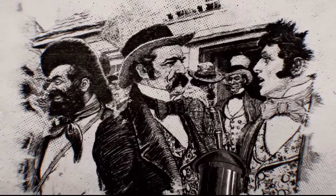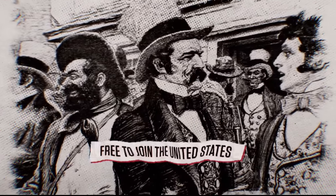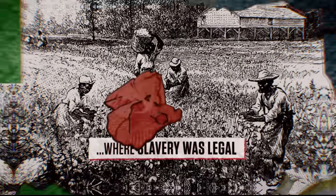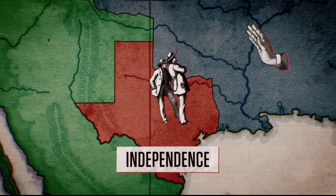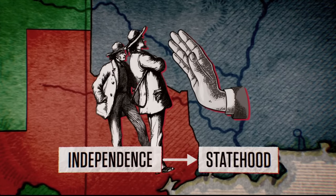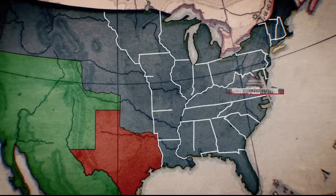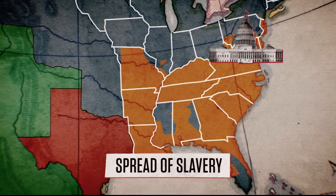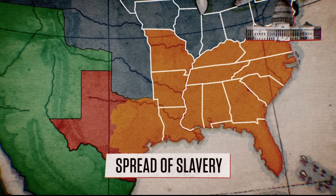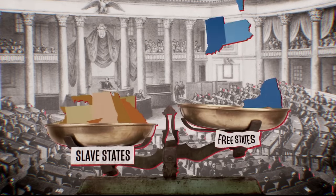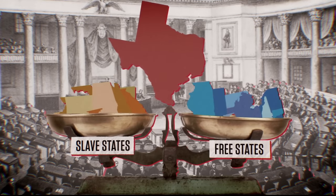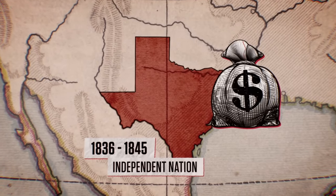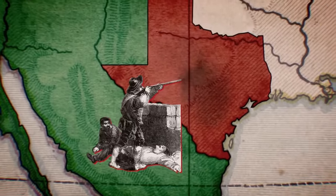The newly independent Texans were psyched. As an independent entity, they would be free to join the United States, where slavery was legal. But oh, the irony — slavery, which had greatly influenced their bid for independence, now practically extinguished any chances they had for statehood. Because back in the US, Congress was grappling with the spread of slavery as their nation expanded westward. Annexation of Texas would bring in another slave state. As Congress debated how to maintain the balance, Texas remained in a state of limbo, struggling as an independent nation for nearly ten years, suffering from economic instability and border disputes with Mexico.